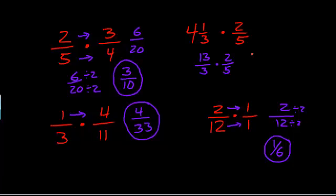So 13 times 2 is 26, and 3 times 5 is 15. You figure out how many times does 15 go into 26. Well, that goes in once. So we need to reduce it now. And 26 minus 15 gives us an answer of 11. So 1 and 11 fifteenths.